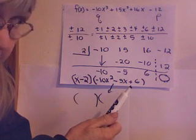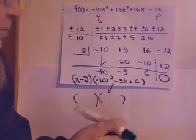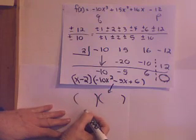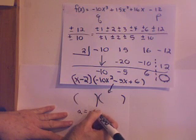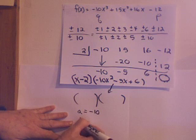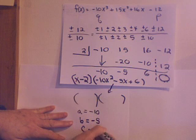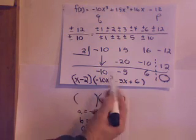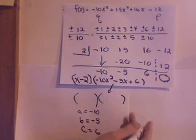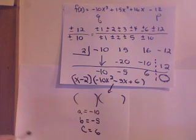So, plug those numbers into the quadratic formula. Remember, before you use quadratic, I like you to list what you're using for A, B, and C. So, A is negative 10, B is negative 5, and C is 6. And remember, with the quadratic formula, you're probably going to get two answers. So, work it out and see what you get.